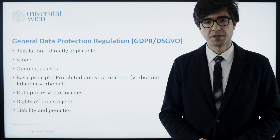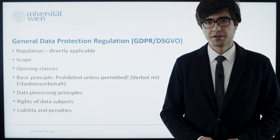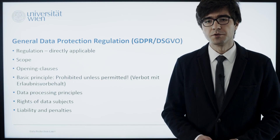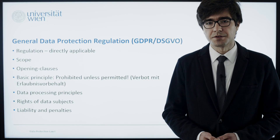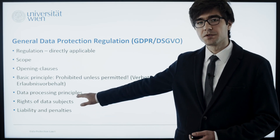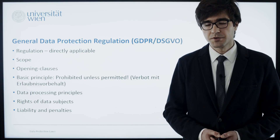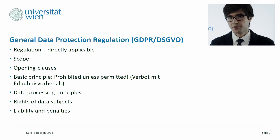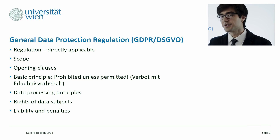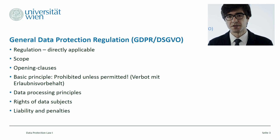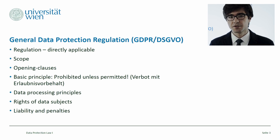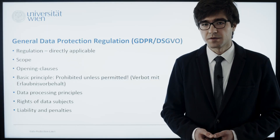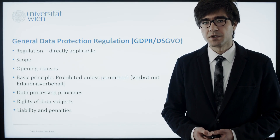The basic principle that governs the GDPR is very simple: processing of personal data is prohibited unless it is permitted. So you cannot just start processing personal data whenever you want — you have to find legal grounds in the GDPR that allow you to do so. What else can we find in the GDPR? For example, the data processing principles — general, abstract rules that set out a framework on how personal data should be processed. Also, the GDPR grants a number of rights to data subjects, which we'll discuss in the next video. It also regulates the responsibilities and liabilities of people or entities that process personal data, and in case they do not observe the GDPR, the penalties that can be given to them.